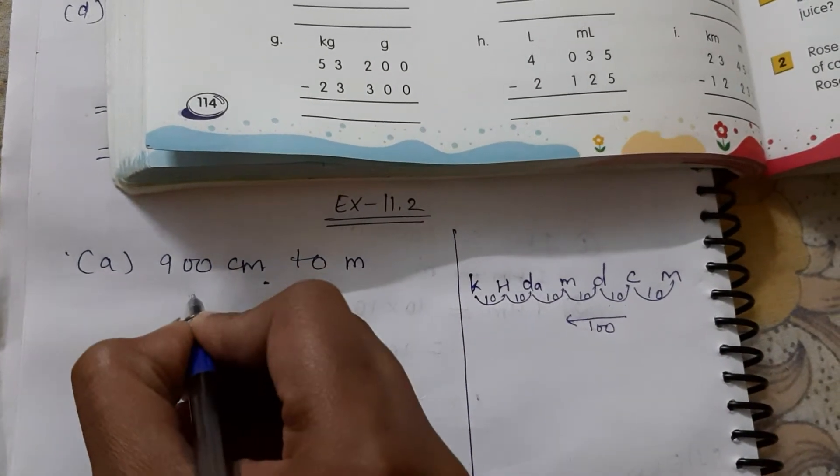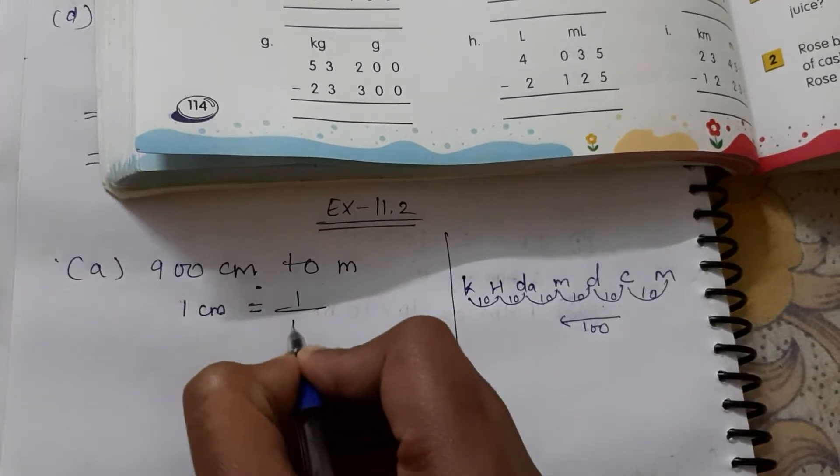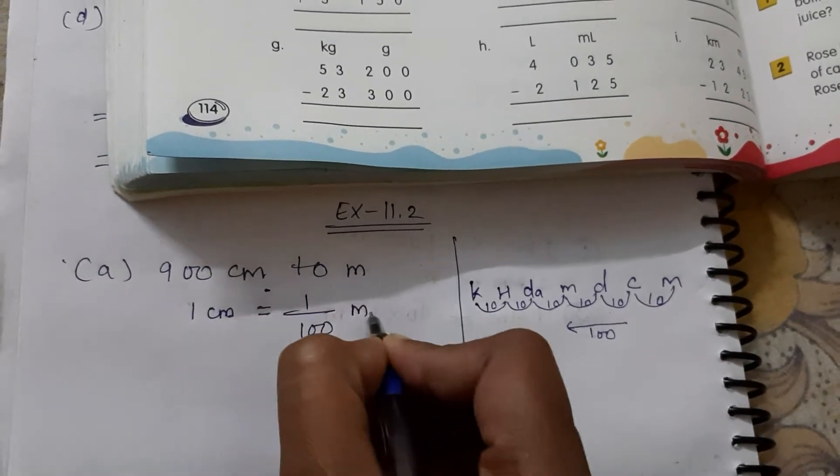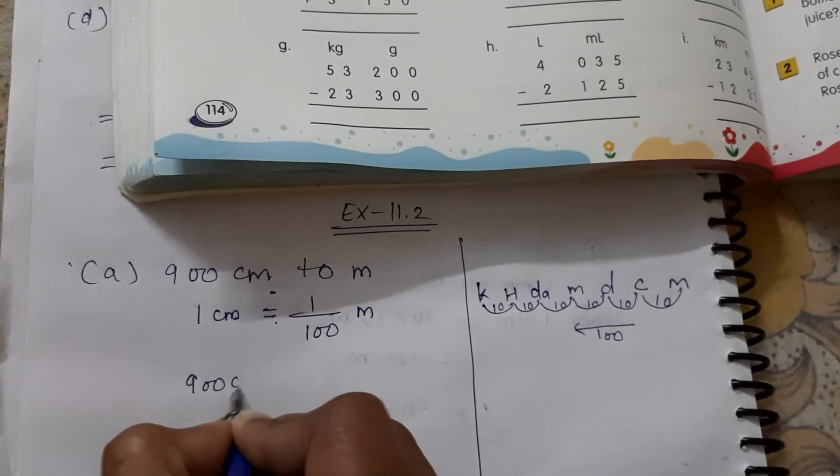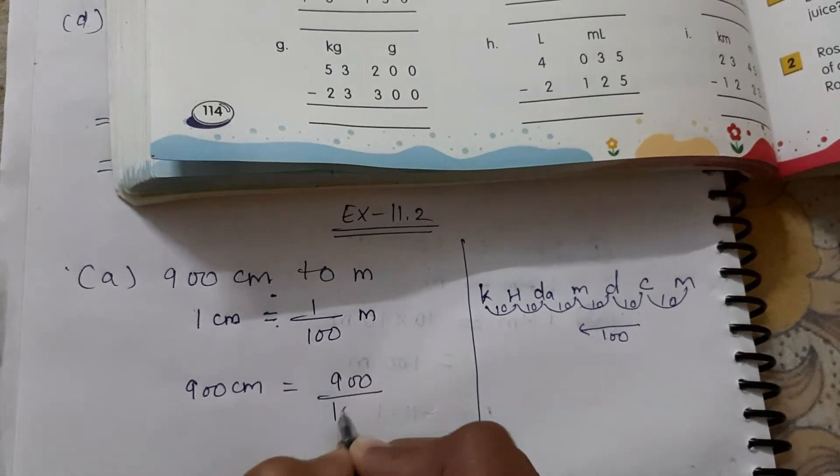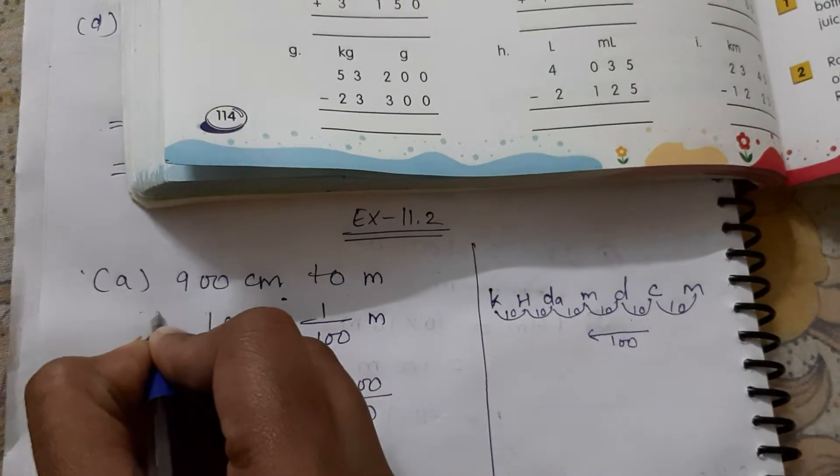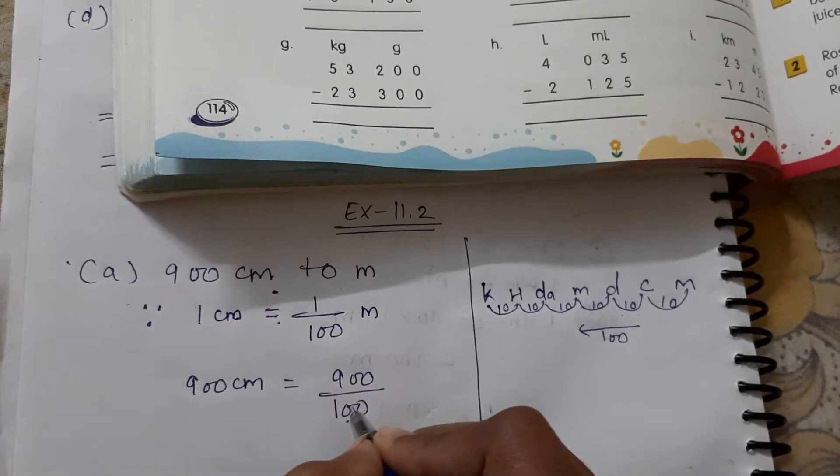So you can write here the formula: 1 centimeter equal to 1 upon 100 meter. Now, what will it be? 900. Since if this is the formula, it will be like this. Now, if the ones place is 0, so we will cut it.